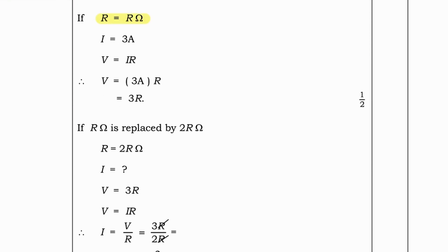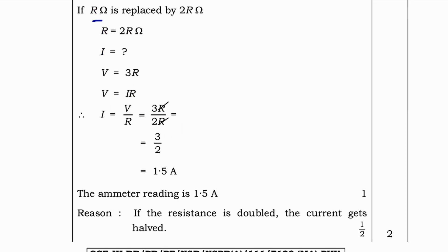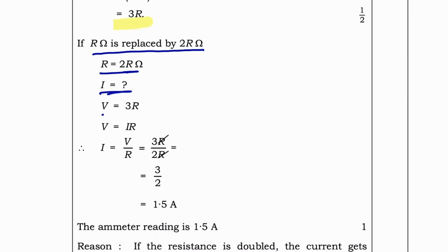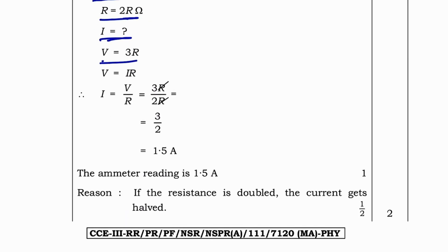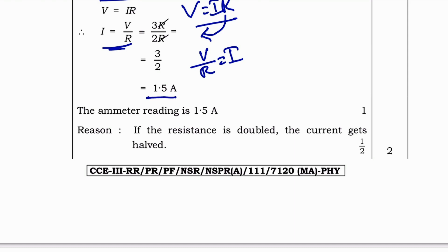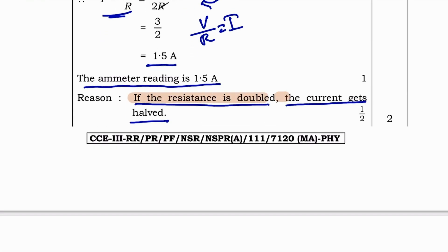Answer, if R is R ohm and I is equal to 3A, so ohm's law formula is V is equal to IR and when you substitute V is 3R. Now, if R is replaced by 2R ohm, we need to find I and as we have got before, V is equal to 3R. V is equal to IR and then if we bring R downwards, then V by R is equal to I, which is here. And when we substitute, we will get answer 1.5A. The ammeter reading is 1.5A. Reason, if the resistance is doubled, the current gets half. You need to know this because it can also come in one marks as MCQs.